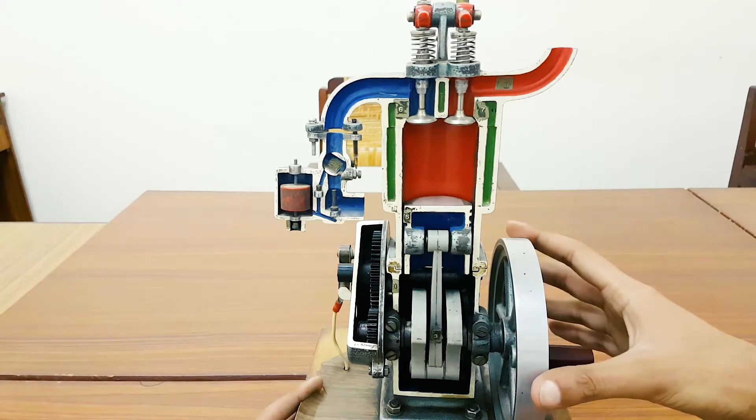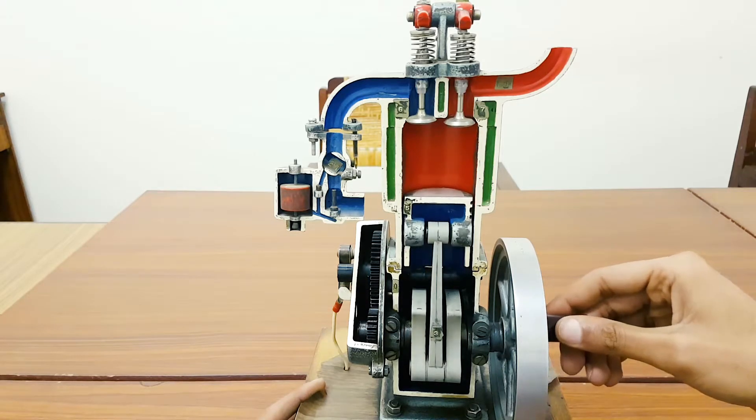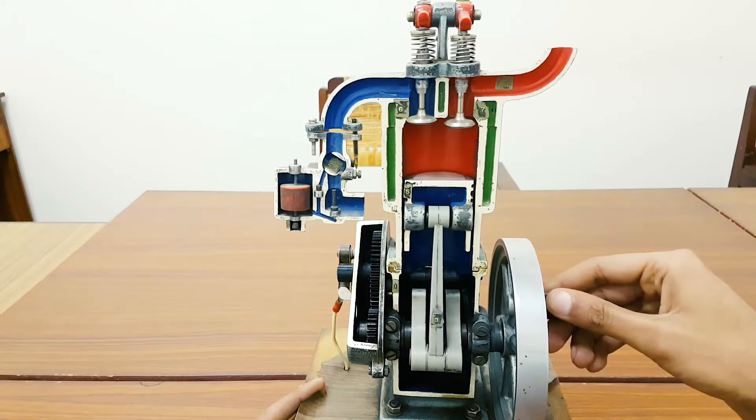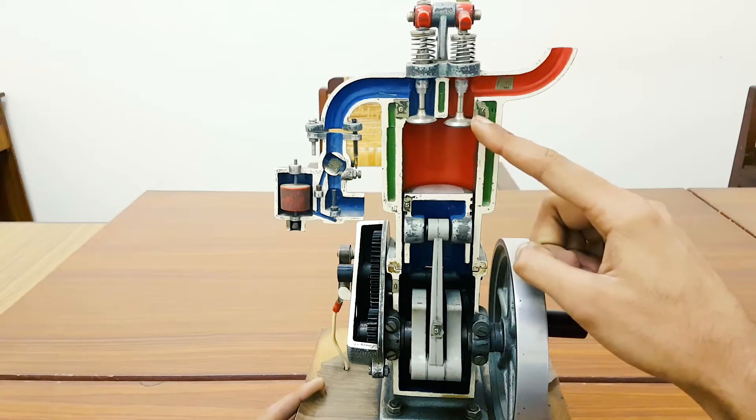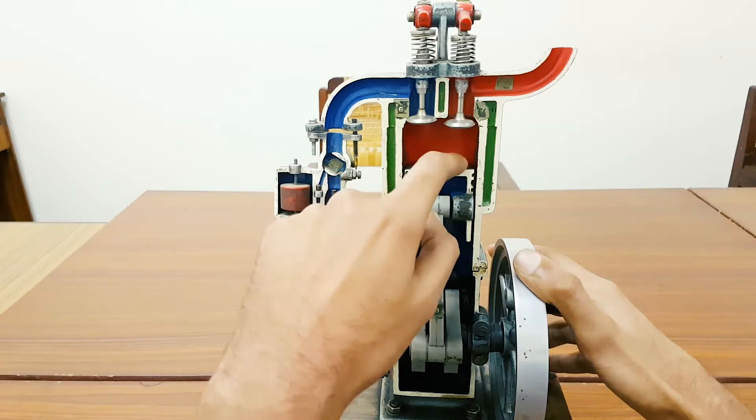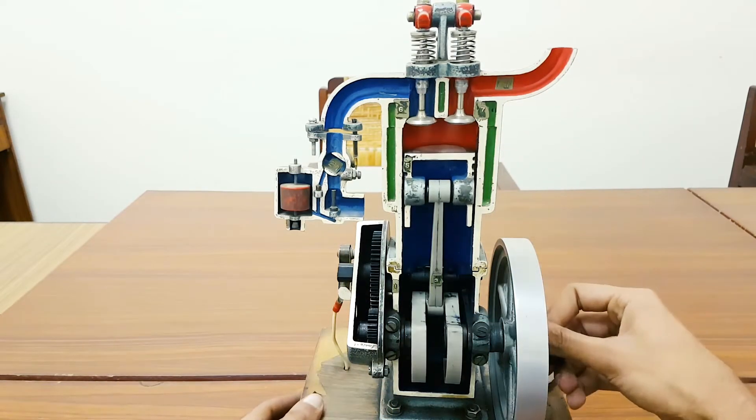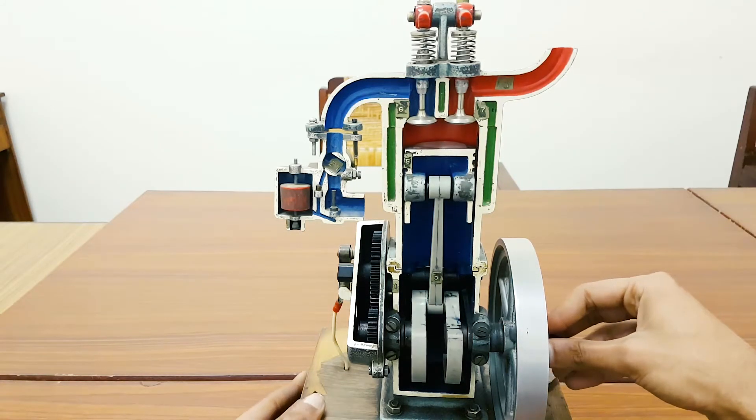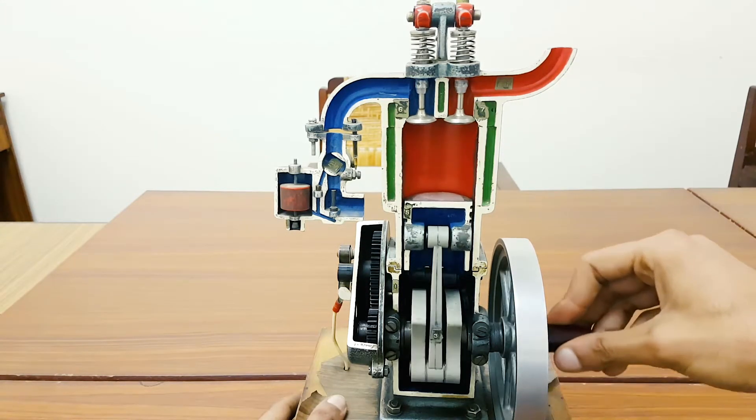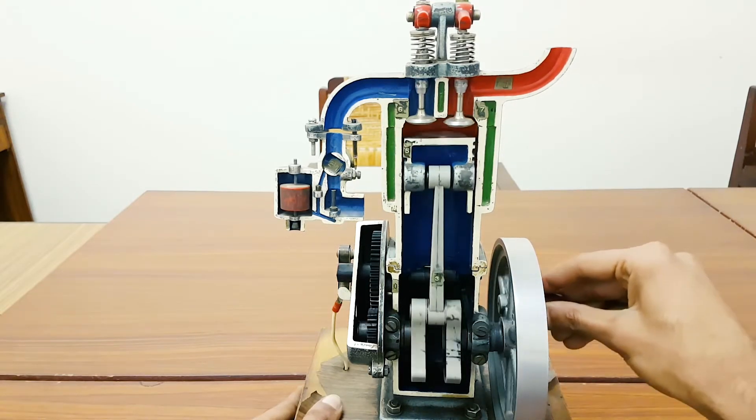The fourth operation is the exhaust stroke. When the piston again moves up, the exhaust valve has opened. When it opens, the burned air-fuel mixture or the byproducts are flowing outside the engine through this manifold. Starting from here again: intake stroke, compression, power, and exhaust.